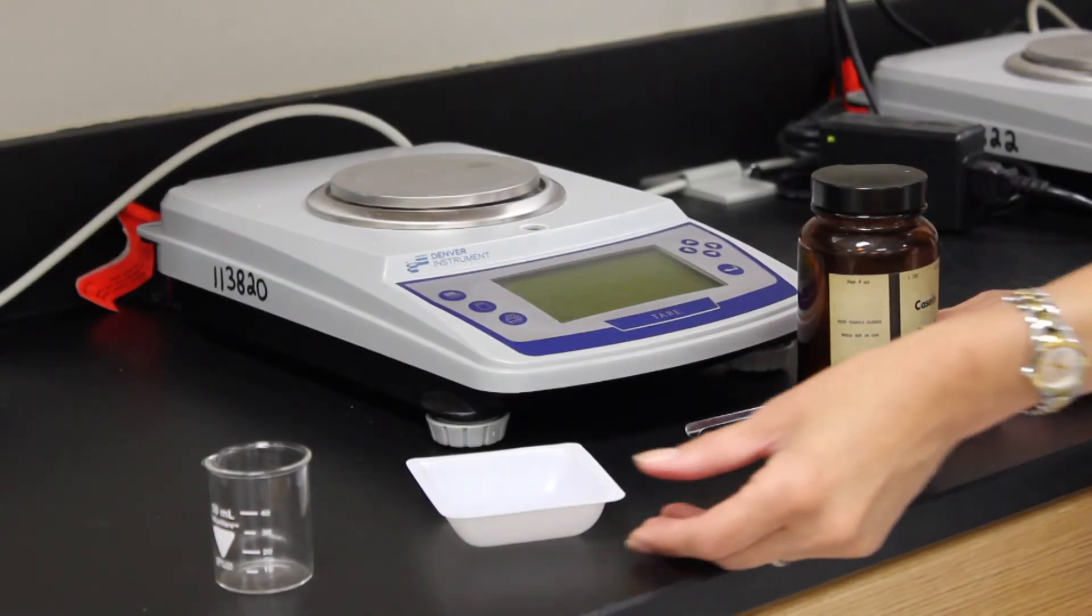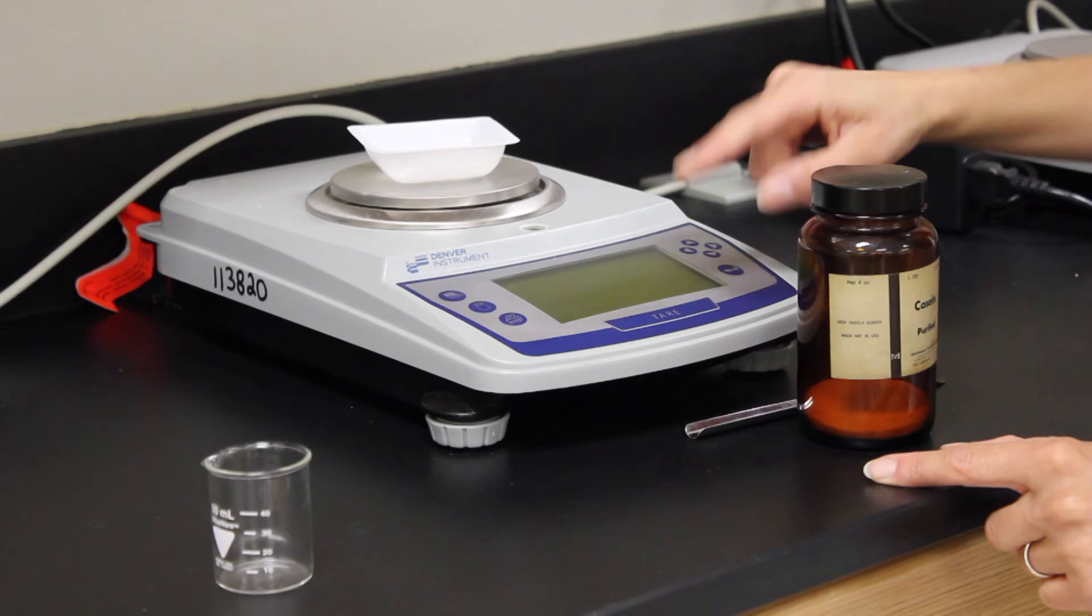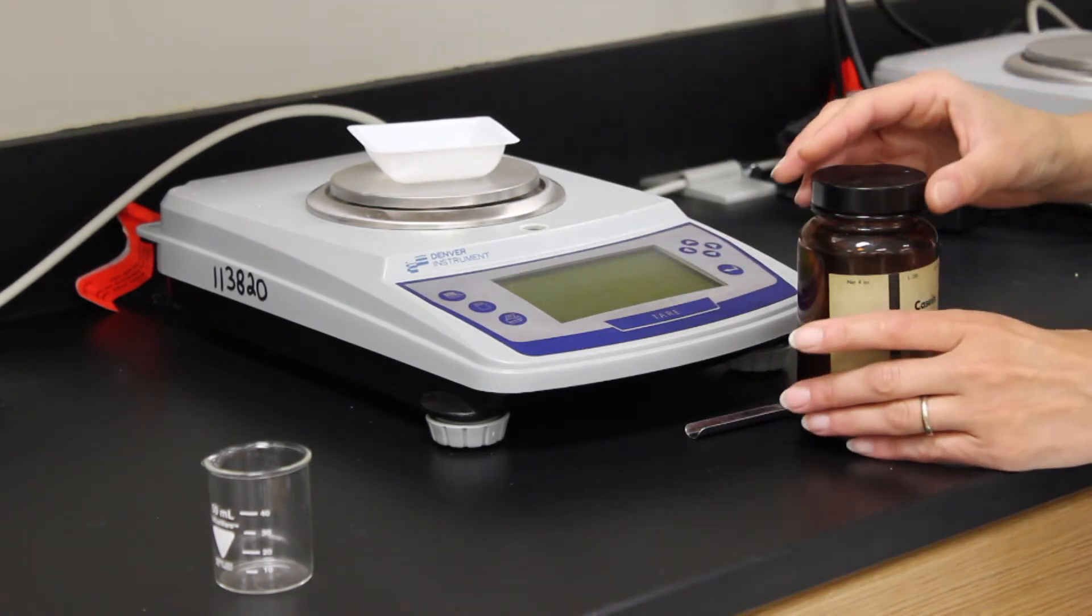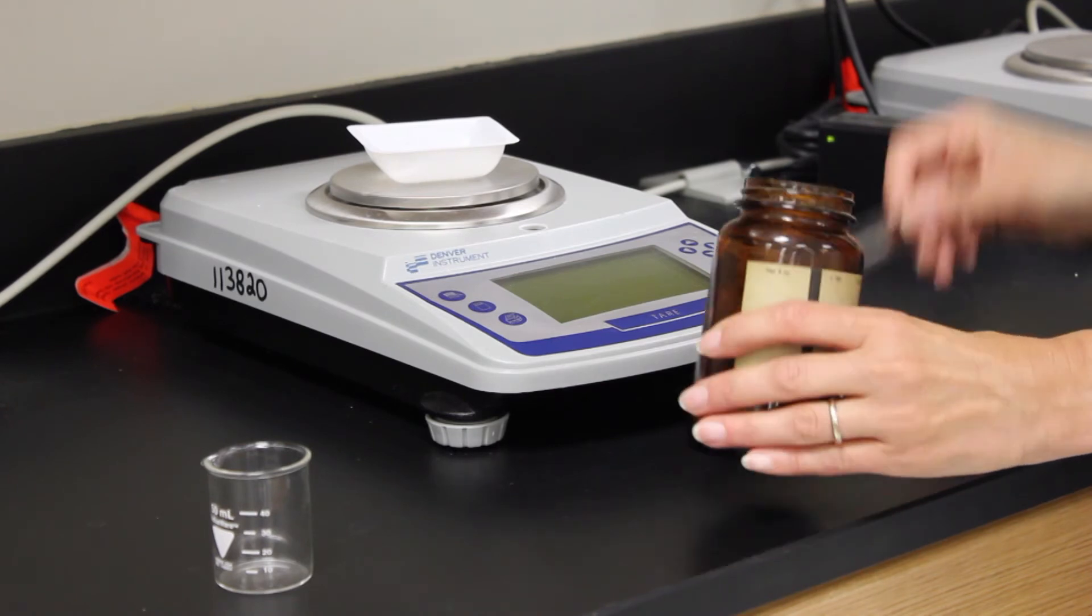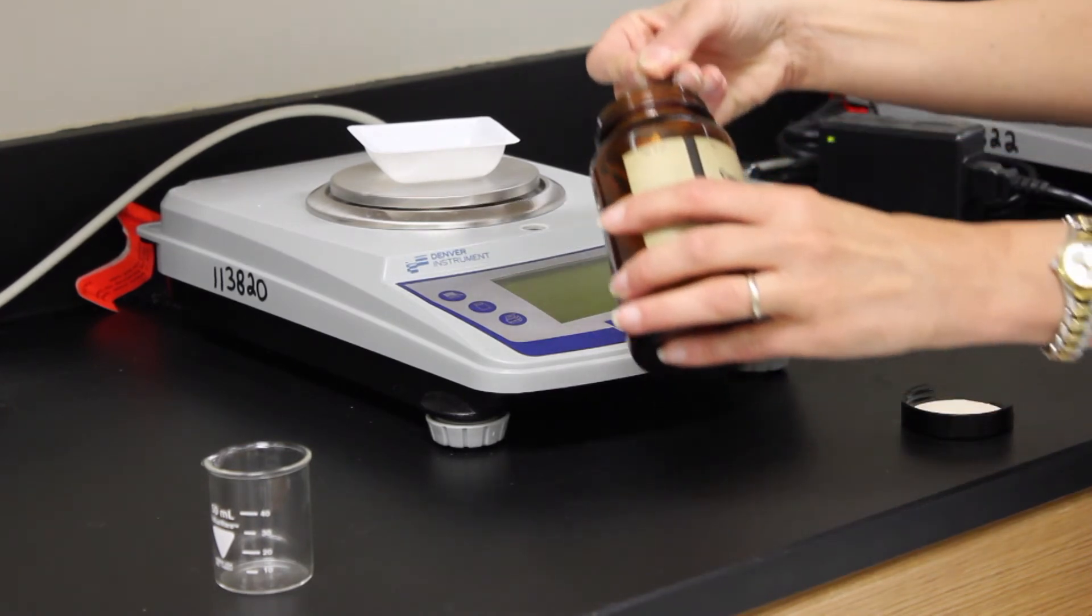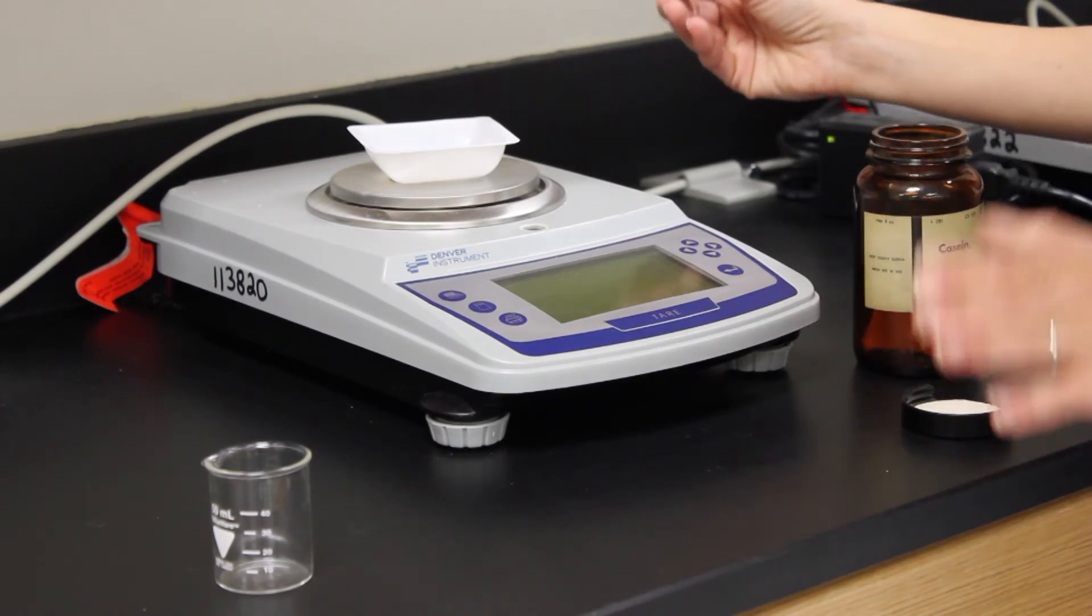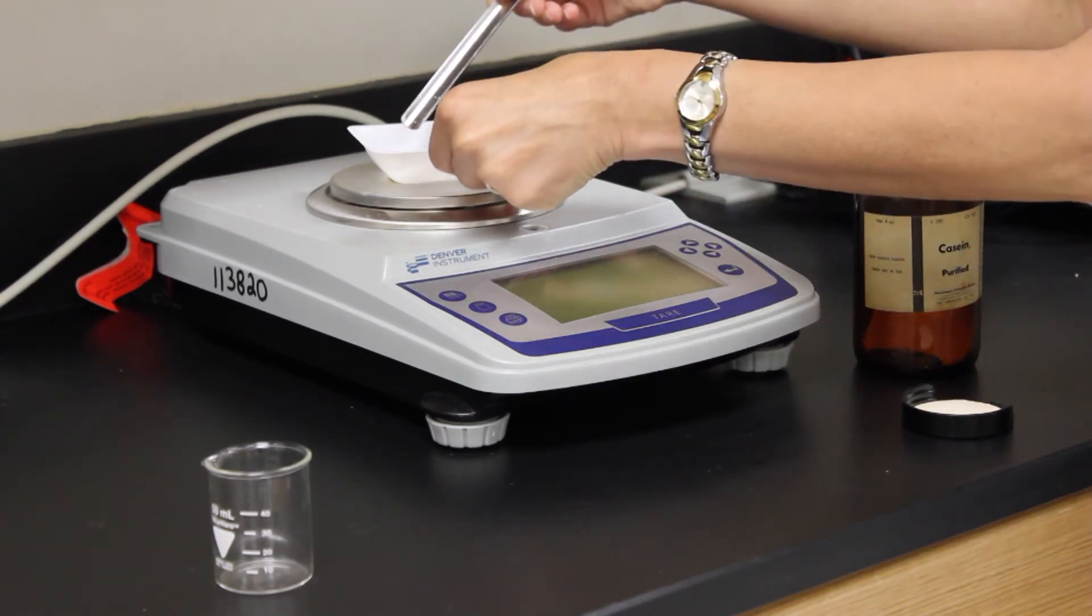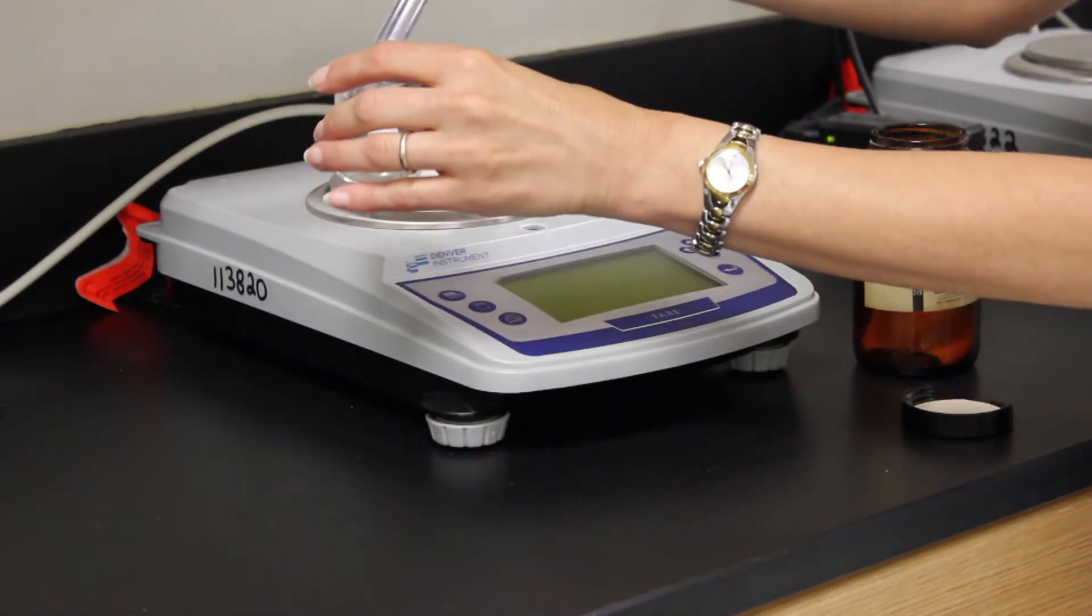Here is a demonstration of the proper way to weigh out a solid. First start with a weigh boat and tare the balance. Use a scoopula to obtain the amount of solid needed. If too much is used, do not put it back into the original container. This could contaminate the entire bottle. Dispose of any extra in the appropriate waste container.